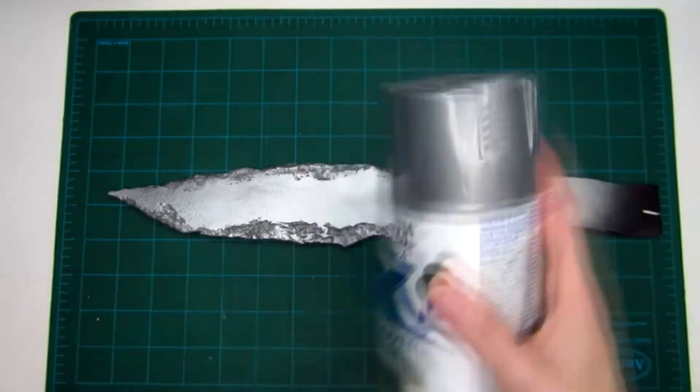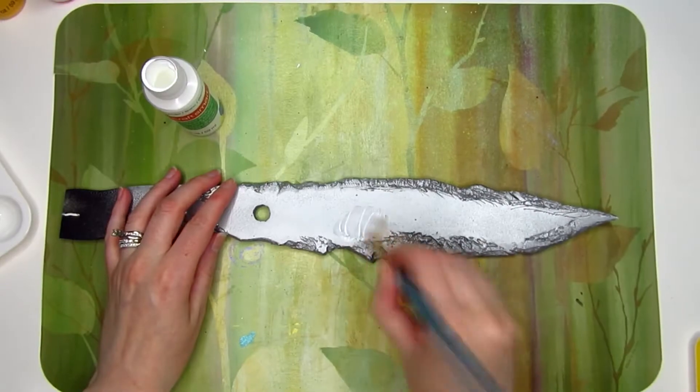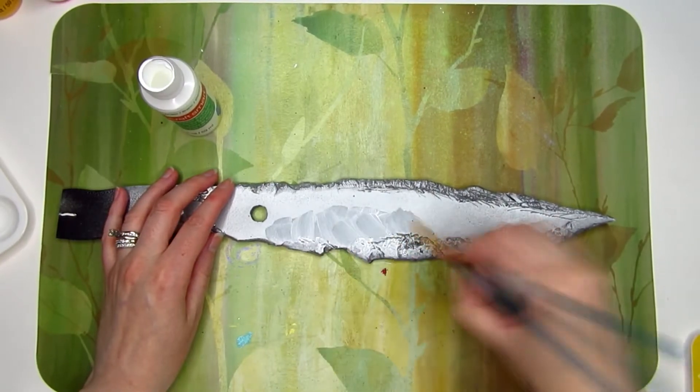After I let that dry for 24 hours, I sprayed it with a metallic silver paint. Then once that was dry, I added some white to the flat sides of the blade.